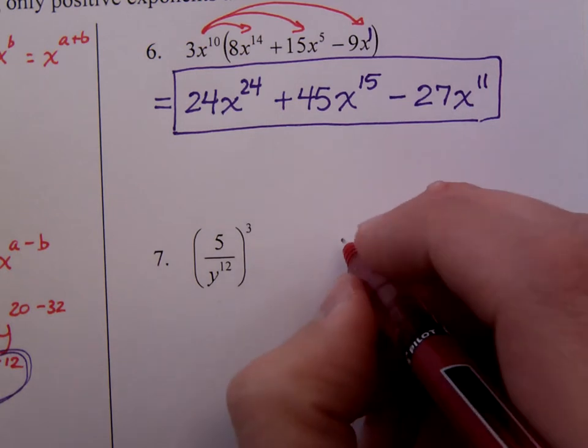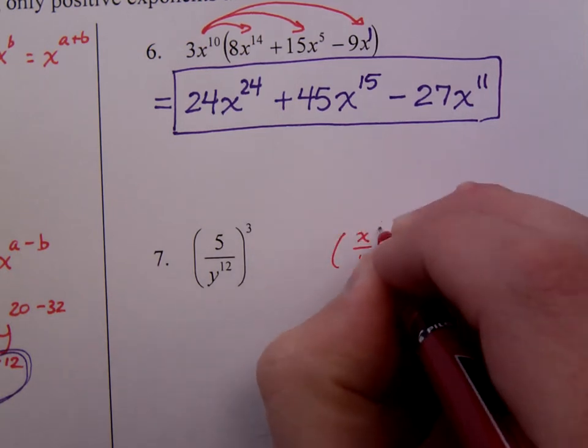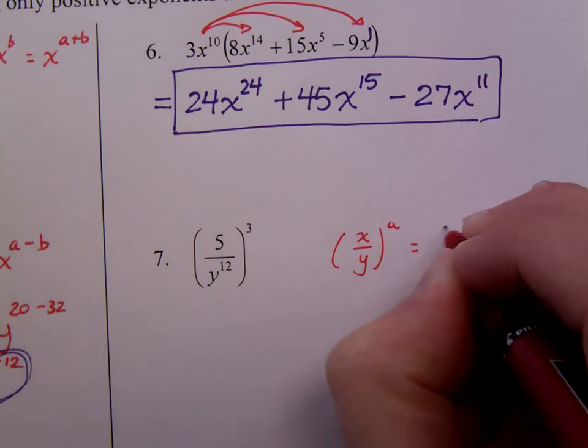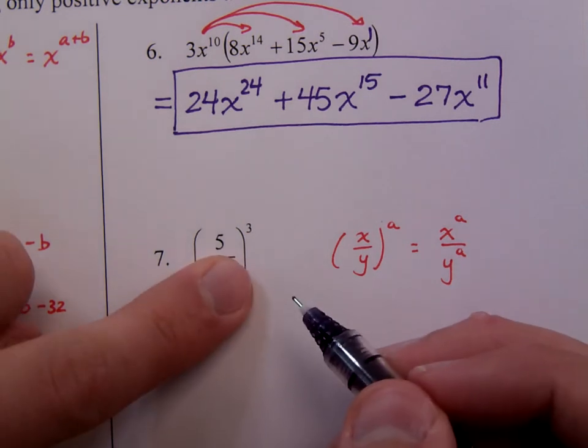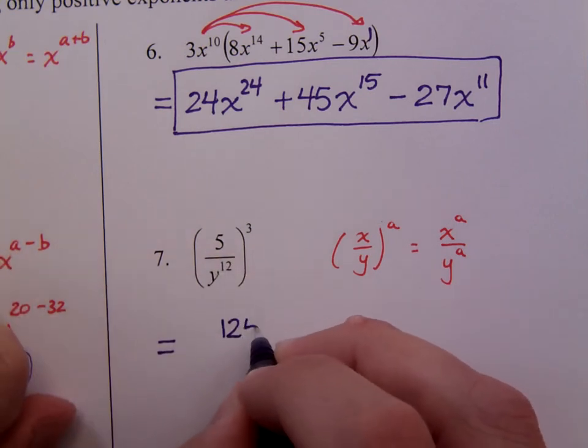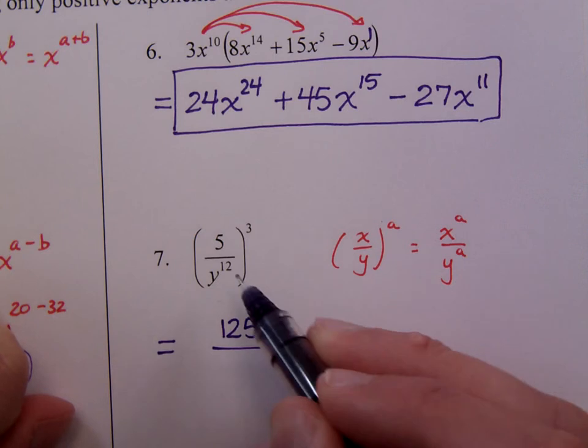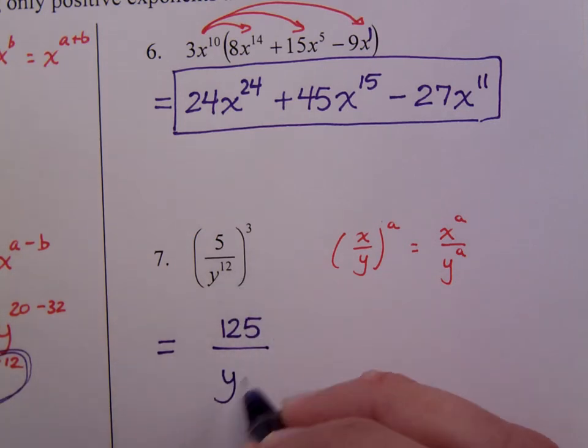7 is a lot like number 5. I mentioned this to you before. If you have a quotient to a power, you just raise each of these pieces to that power. So here, this really means 5 to the 3rd, which is 125. Make sure you know your powers and you work that correctly. y to the 12th to the 3rd. Power to a power means you multiply, so that's y to the 36th.